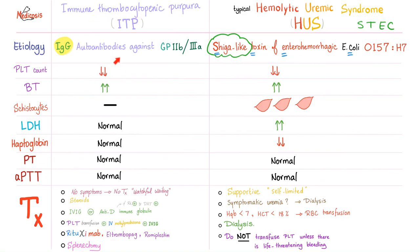Platelet count is low in ITP — it's a thrombocytopenia. In HUS it's also low because it's a triad: microangiopathic hemolytic anemia, thrombocytopenia, and renal failure or uremia. Bleeding time: if platelet count is low, bleeding time will be high. Schistocytes are absent in ITP but present in HUS. LDH is normal in ITP but high in HUS because there is a hemolytic anemia.